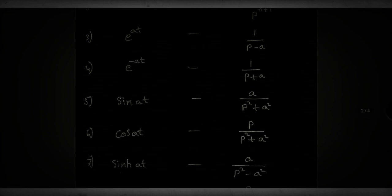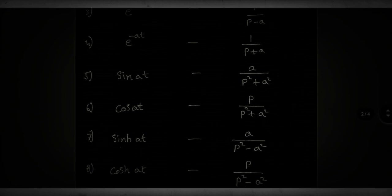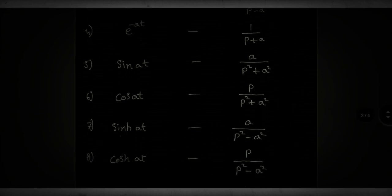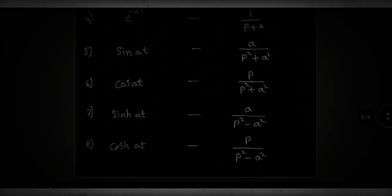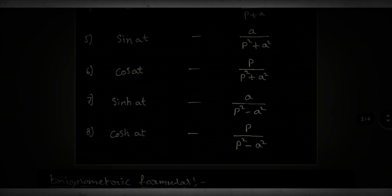It is important to note that L of sin at is equal to a over p squared plus a squared, and L of cos at is equal to p over p squared plus a squared. Note the difference between these two trigonometric formulas.